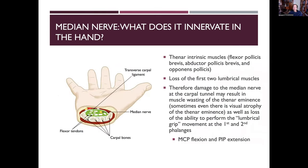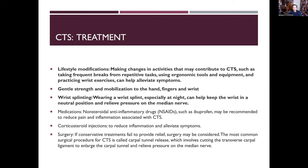The median nerve innervates flexor pollicis brevis, abductor pollicis brevis, opponens pollicis, and the first two lumbrical muscles. Damage causes muscle wasting and loss of the lumbrical grip — MCP flexion and IP extension — at the first and second digits. In severe cases, the thenar eminence dissipates, resulting in the 'ape hand' deformity due to loss of opposition.